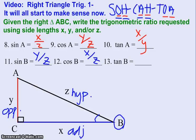And lastly, the tangent of B, which is opposite over adjacent, looks like it's Y over X.